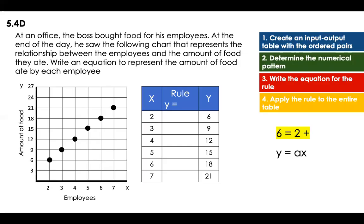Now I have two options. For the first option: y equals 6 is equal to 2 plus what? Could be 2 plus 4. So that could be the first answer. But let me check if the rule applies to the next pair: 7 should equal 3 plus 4, but my y is not 7 — my y is 9. So that one cannot be right; this additive rule is wrong.